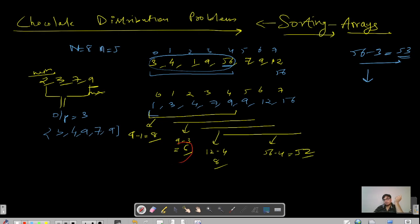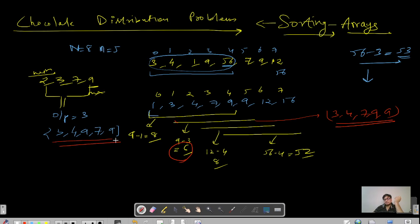The minimum among 8, 6, 8, and 49 is definitely 6. The elements associated with that group are 3, 4, 7, 9, and 9, which exactly matches the expected output. Since we don't need to return the actual group — just the difference of maximum and minimum — this approach works perfectly.